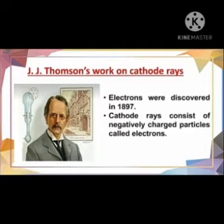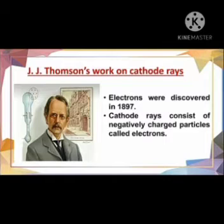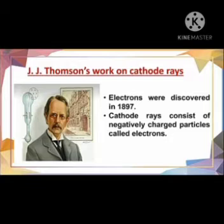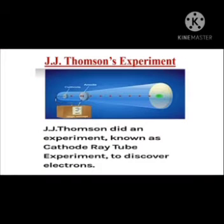Next is the discovery of electrons. Sir J.J. Thomson discovered electrons in 1897 when he was working on cathode rays. He found that cathode rays consist of negatively charged particles, and he called these particles electrons. I will explain how he did his experiment — Sir J.J. Thomson performed an experiment known as the cathode ray tube experiment to discover electrons.